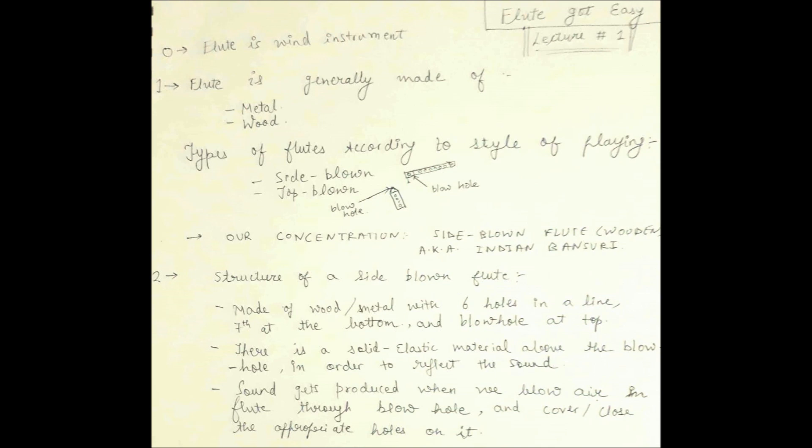According to the method of blowing air, there are two types of flutes: side blown and top blown. In side blown, we have to blow air tangentially from the blowhole, while in top blown flute, we have to blow air from the top by placing the blowhole inside the mouth.